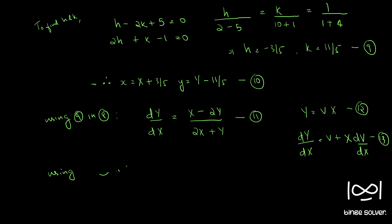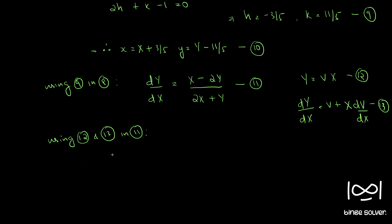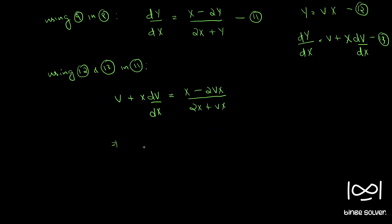Using equations 12 and 11, we get v plus X dv/dX equal to (X minus 2vX) by (2X plus vX). Rearranging and canceling out X, X dv/dX equals (1 minus 2v) by (2 plus v) minus v, which simplifies to (1 minus 2v minus 2v plus v squared... sorry, minus v squared) by (2 plus v).